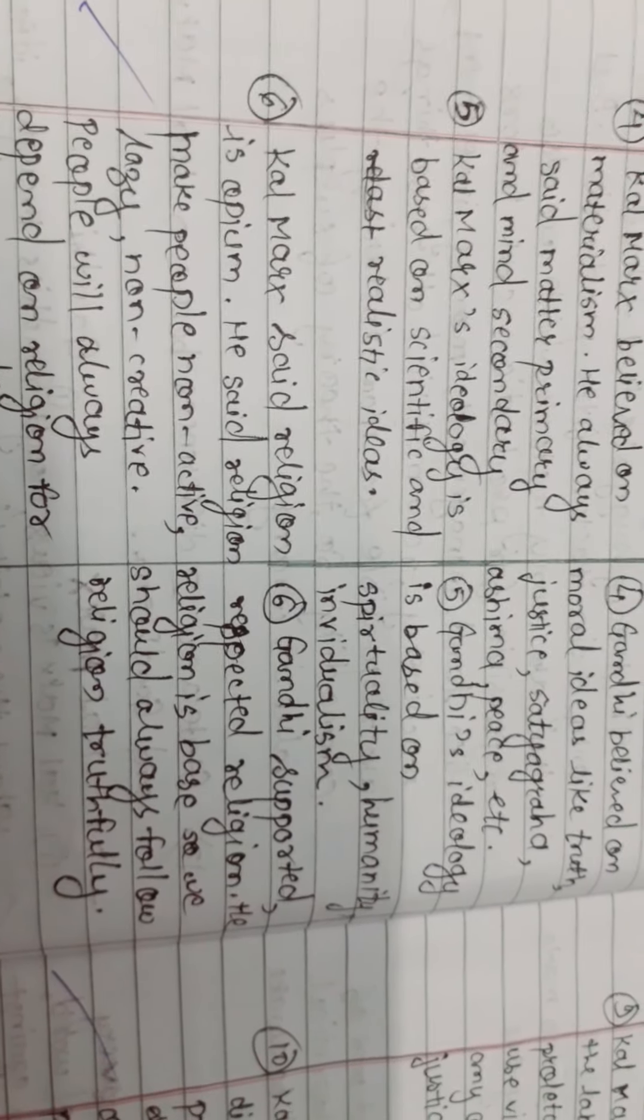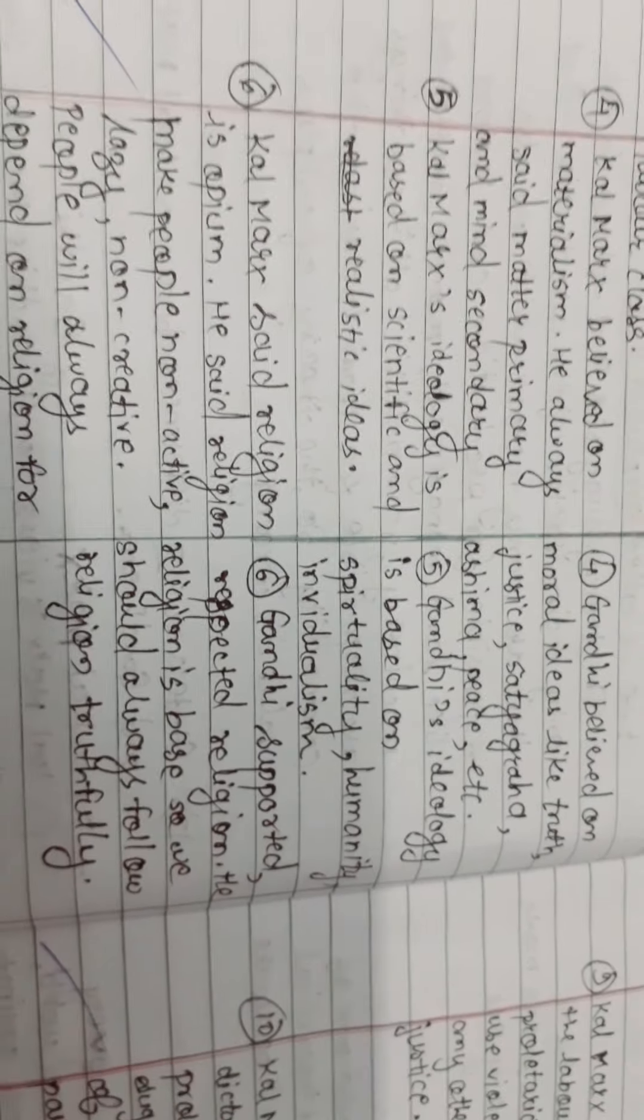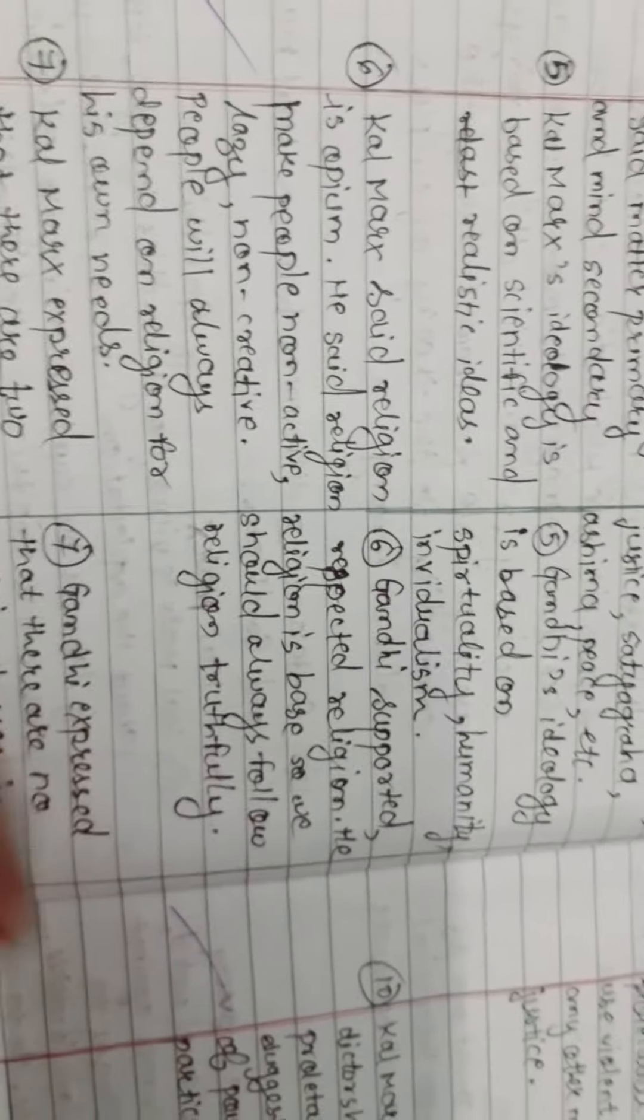Karl Marx's ideology is based on scientific and realistic ideas. Gandhi's ideology is based on spirituality, humanity, and individualism.